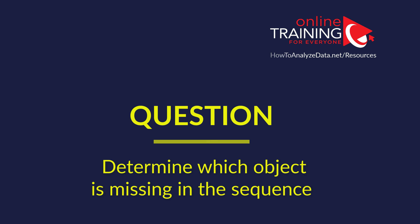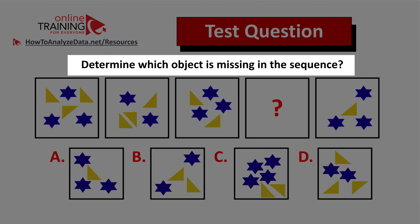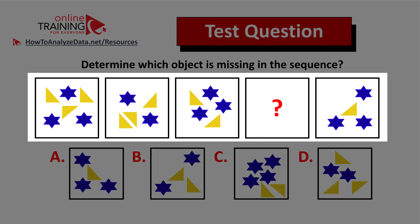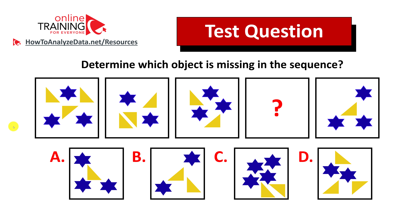Some of you might find this question tricky, but regardless of whether you can solve it on your own, you will be excited to learn the solution to this real-life assessment test question. Determine which object is missing in the sequence. You're presented with a sequence of five objects and object number four is missing. You also have four different choices to choose from — choices A, B, C, and D. Each object contains triangles as well as stars. Do you recognize the pattern? Give yourself 10 to 15 seconds, maybe pause this video.